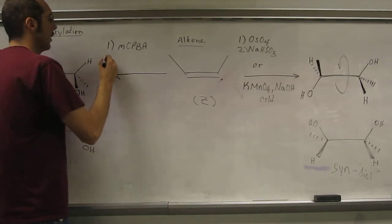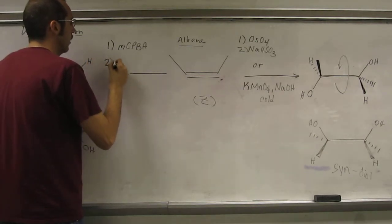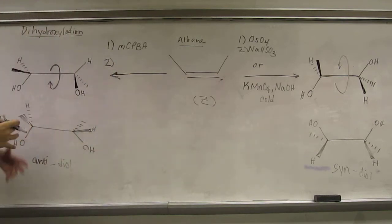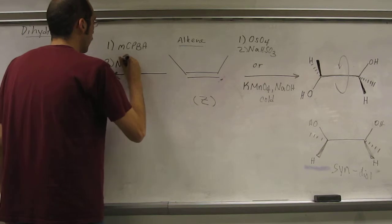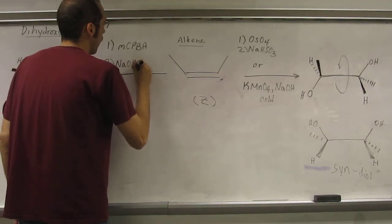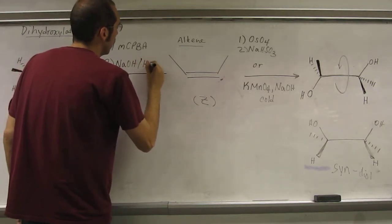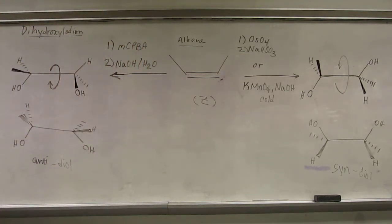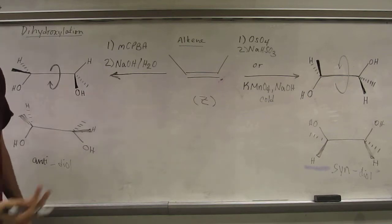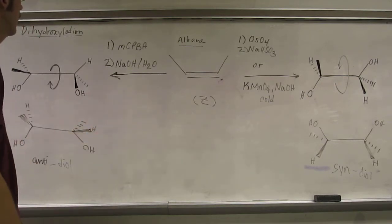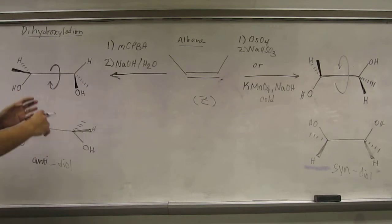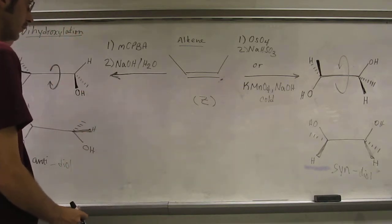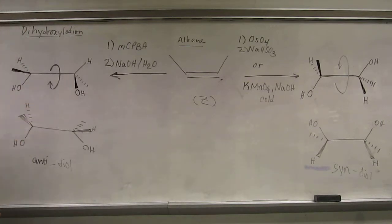Then when you get that, you can do two different reactions to open it. One of those reactions would be the strong basic conditions, NaOH and water. That's going to give you the SN2 attack from the backside of the epoxide, opening it from the other way and giving you the anti-diol.